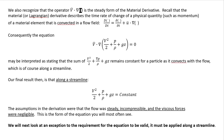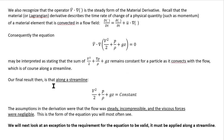We recognize that the operator v dot grad is the steady form of the material or Lagrangian derivative, which describes the time rate of change of a quantity for a material element convected in the flow. For steady flow the time-partial drops out. The equation then states that the sum of the terms in parentheses remains constant for a particle as it convects along a streamline. The final result: v²/2 + p/ρ + gz equals a constant along a streamline — kinetic plus flow plus potential energy is constant, with different streamlines potentially having different constants.